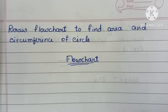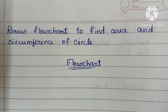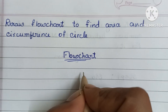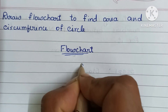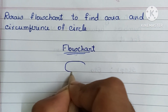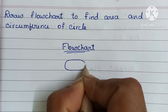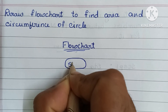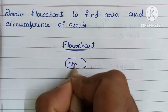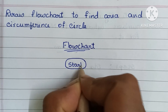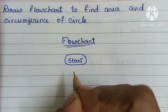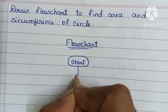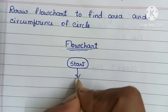A flowchart is a graphical representation of a solved problem. A flowchart always starts with a START statement, which is written within an oval shape. So first we have to draw an oval shape and within that write the START statement.